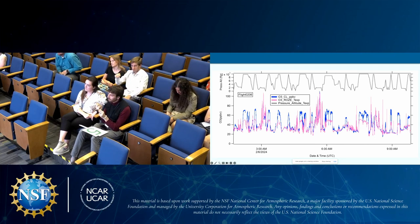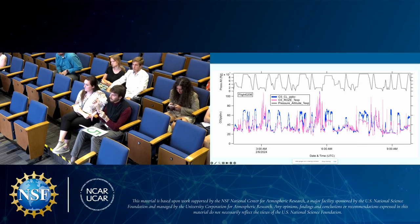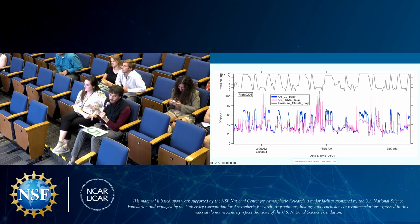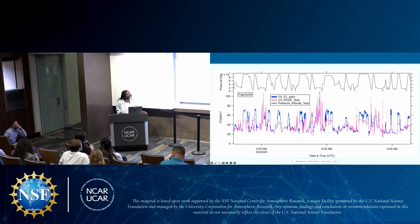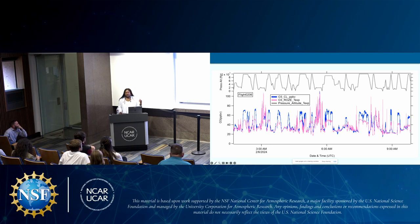When looking at the O3 time series, it looks like the O3 CL tends to peak higher in magnitude than the O3 ROSE. Do you have any idea why that might be? I could imagine it's because ROSE measures in absorption, whereas CL measures in release, so they might be getting different numbers through that, but I don't have a definitive answer.